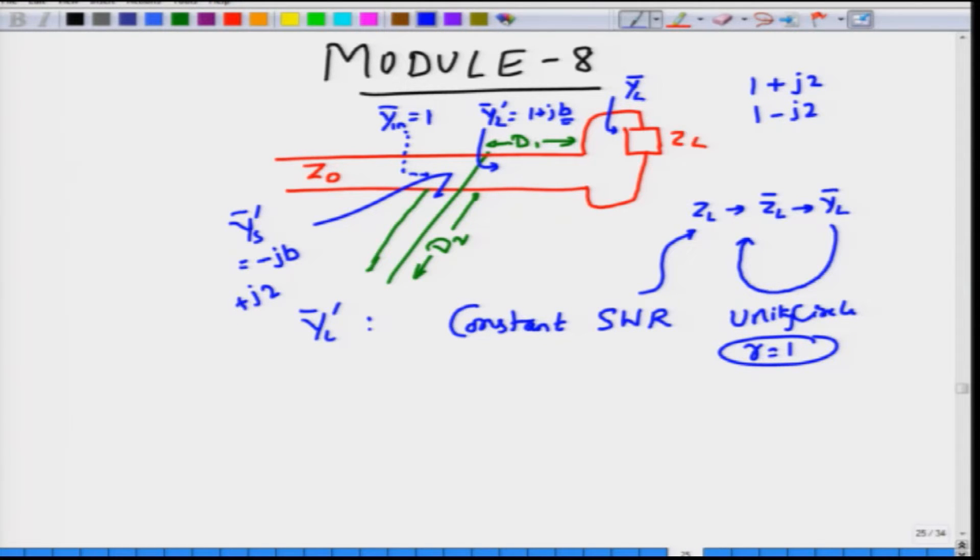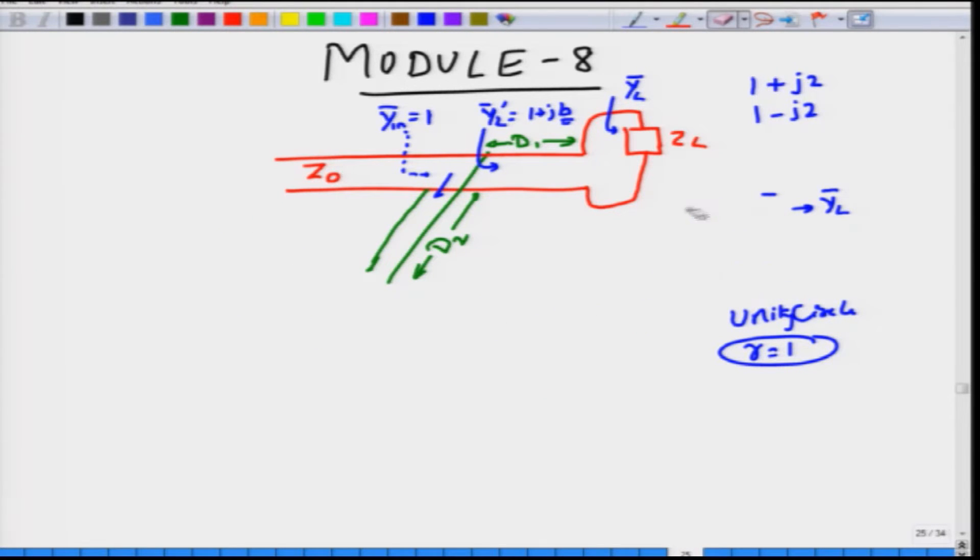This is the basic idea and the distance D2 in order to give you that admittance can be found again by Smith chart. So hopefully this process is very clear. We are going to solve a simple problem, and then we will see how to obtain this D1 and D2.